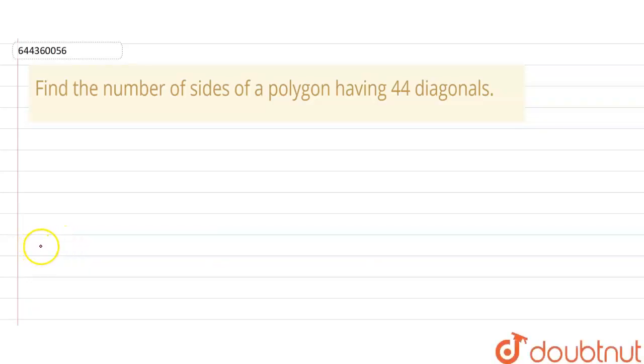Hello friends, we have a question here: Find the number of sides of a polygon having 44 diagonals. As we know the formula, the total number of diagonals in an n-sided polygon equals nC2 minus n.